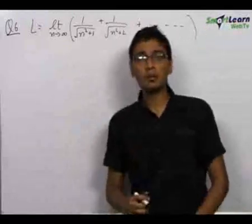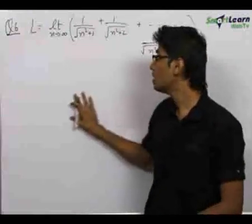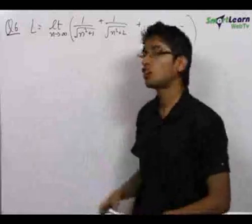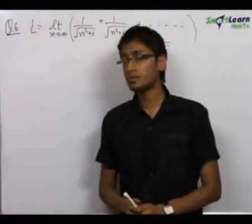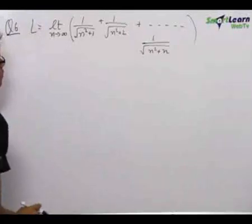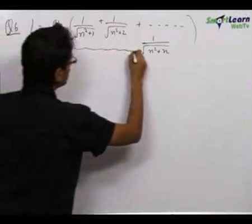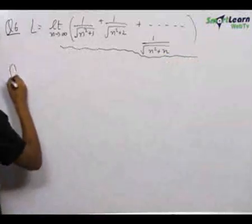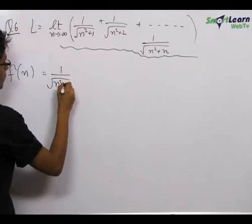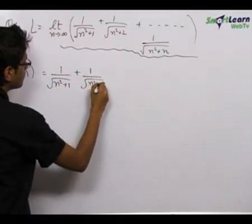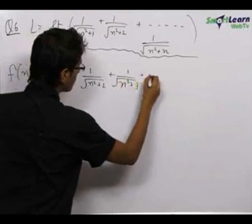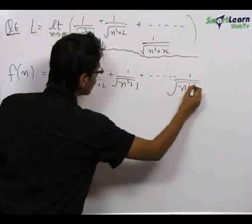This is a very special and important problem because it involves the concept of sandwich theorem. These types of questions cannot be solved by normal regular methods — they require a special approach. We call this f(n), which is equal to 1 upon under root n square plus 1, plus 1 upon under root n square plus 2, plus 1 upon under root n square plus 3, up to 1 upon under root n square plus n.